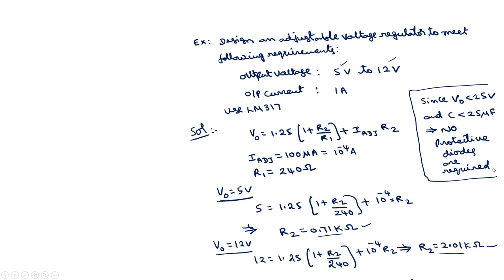This concludes the topic of adjustable voltage regulators. There is another type called switching regulators. As discussed in the last lecture, fixed and adjustable voltage regulators are called linear regulators because the power transistor operates in the linear region. In switching voltage regulators, the power transistor is used as an on-off switch, making them non-linear. There are many advantages of switching regulators, which we will discuss in the next lecture. Thank you.